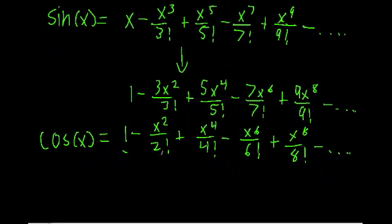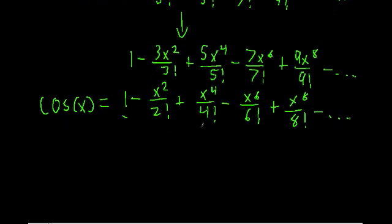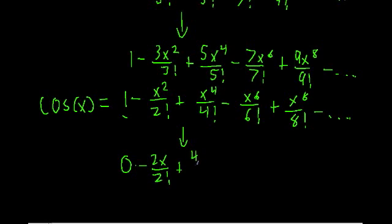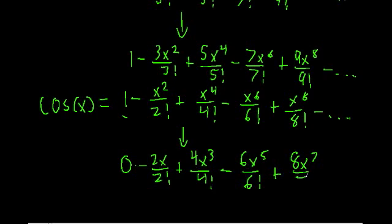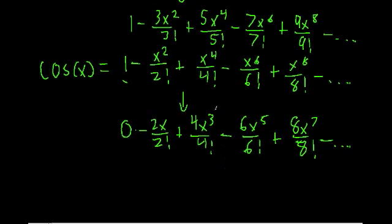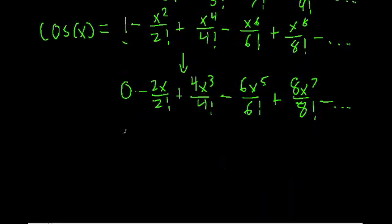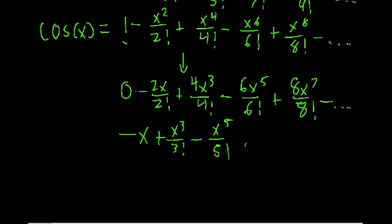Just to really drive this point home, let's take the derivative of the cosine power series and see what we get. The derivative of 1 is just 0, and the derivative of negative x squared is negative 2x over 2 factorial, plus derivative of x to the 4th — that's 4x cubed over 4 factorial, minus 6x to the 5th over 6 factorial, plus 8x to the 7th over 8 factorial, and so on.